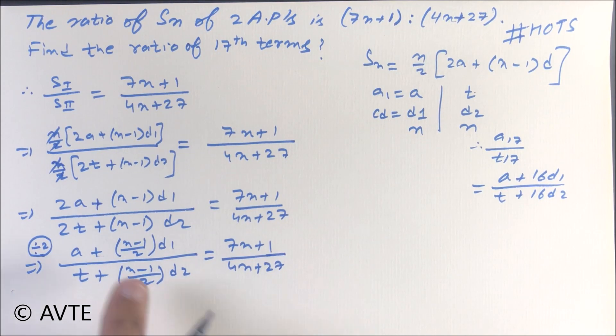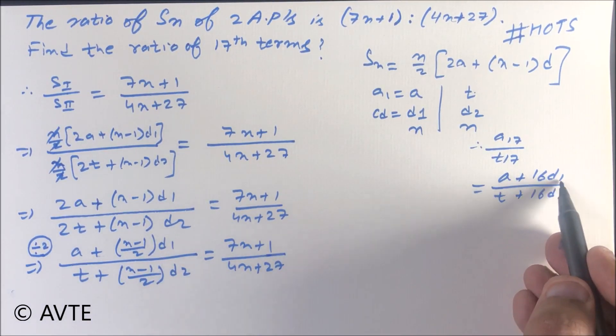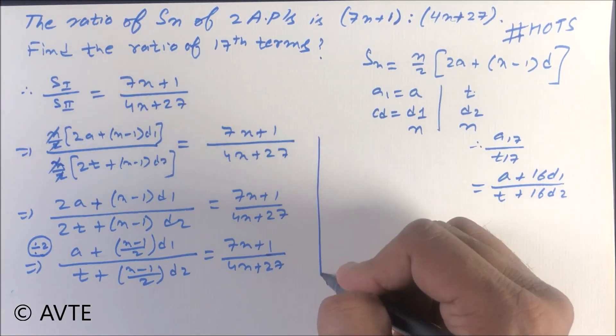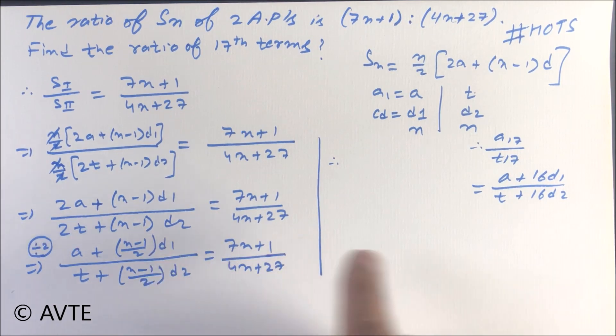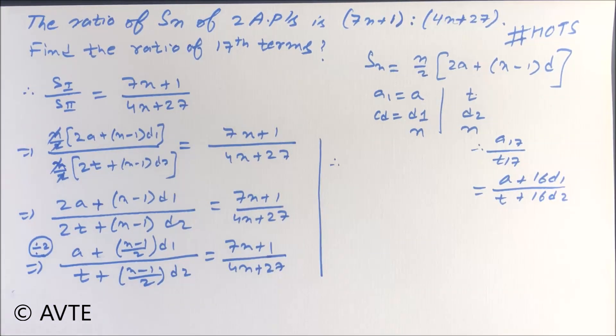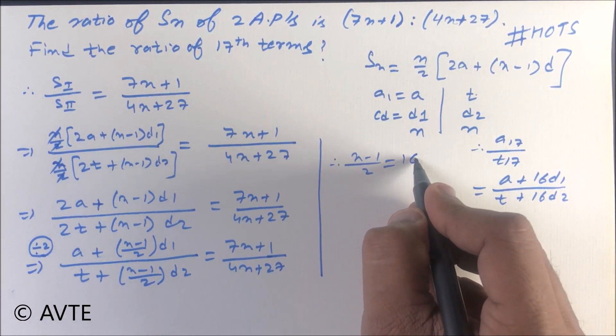This entire expression you divided by 2. We need this as a plus something d1 and here a plus 16 d1. I'll explain again: a plus something d1 and here a plus 16 d1. Rest of all coefficients are same, so n minus 1 upon 2 should be equal to 16.